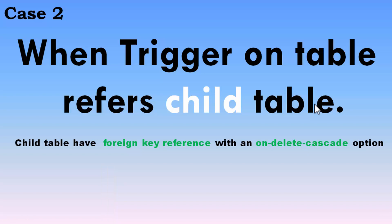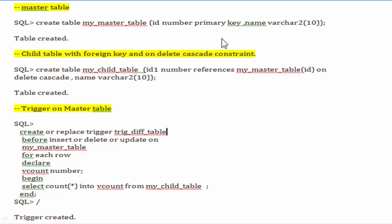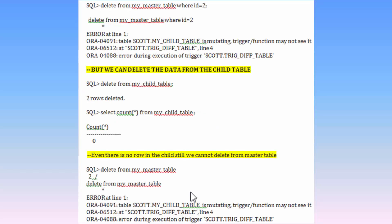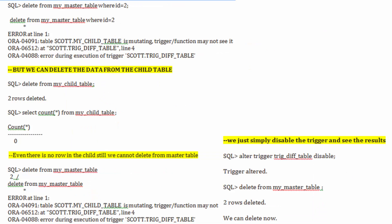Case 2: when a trigger on a master table refers to a child table that has a foreign key with an on-delete cascade option. The master table has two columns, the child table is created with delete cascade, and a trigger on the master table tries to fetch records from the child table. Inserting into the master table succeeds, but when we try to delete from the master table, we get a mutation error. Even when all child records are deleted, we still cannot delete from the master table — we have to disable the trigger.